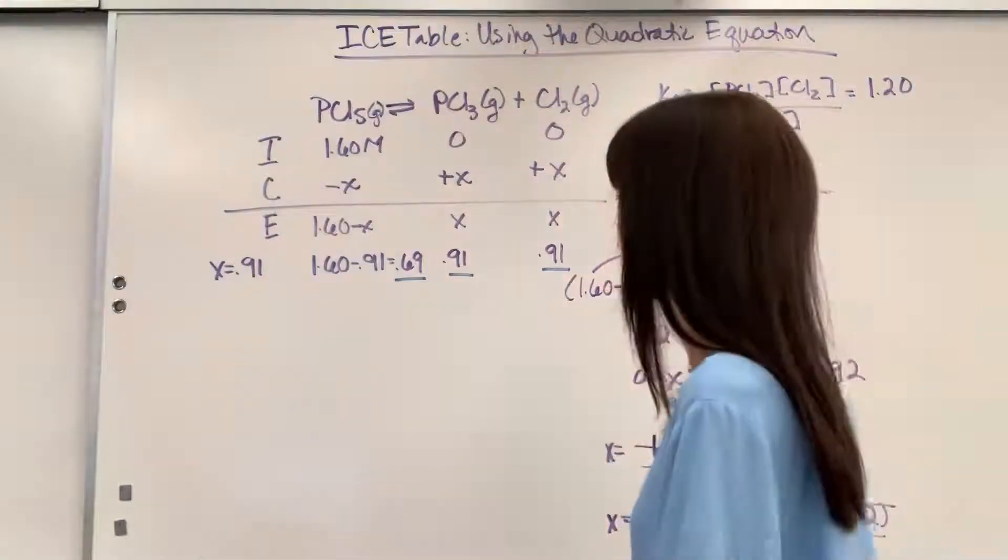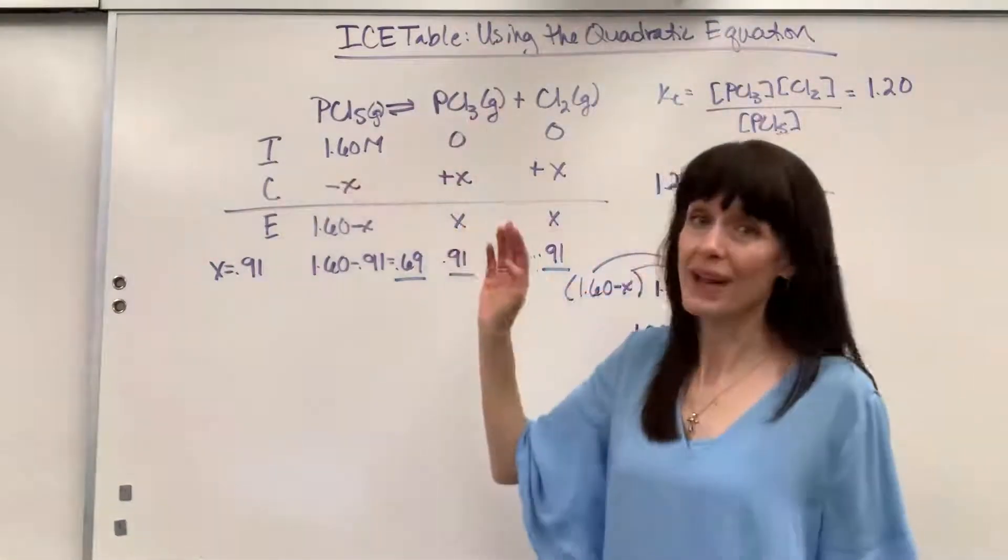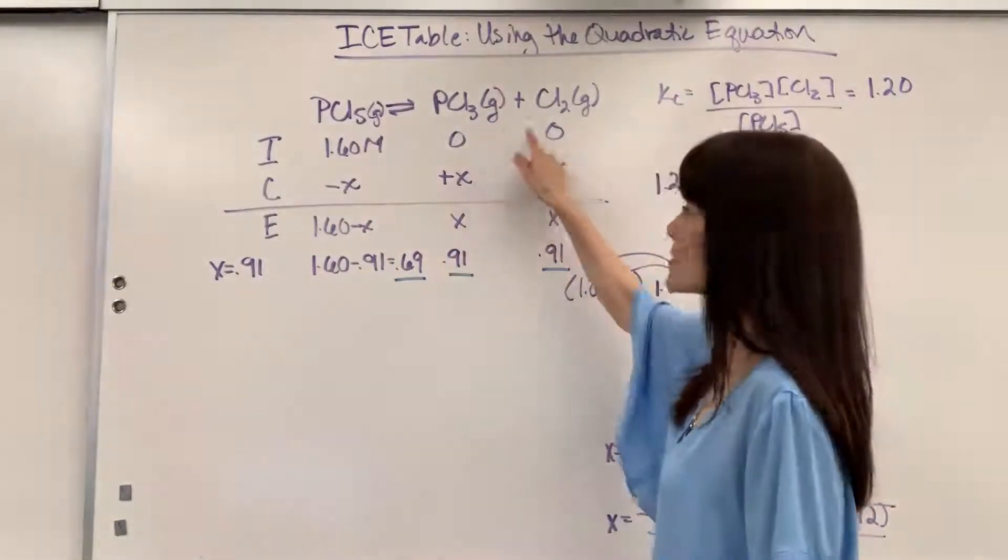So you go ahead and fill in the ice table. So initially, again, we have that 1.6. It means that we have no products at the very beginning, so that is going to be zero.